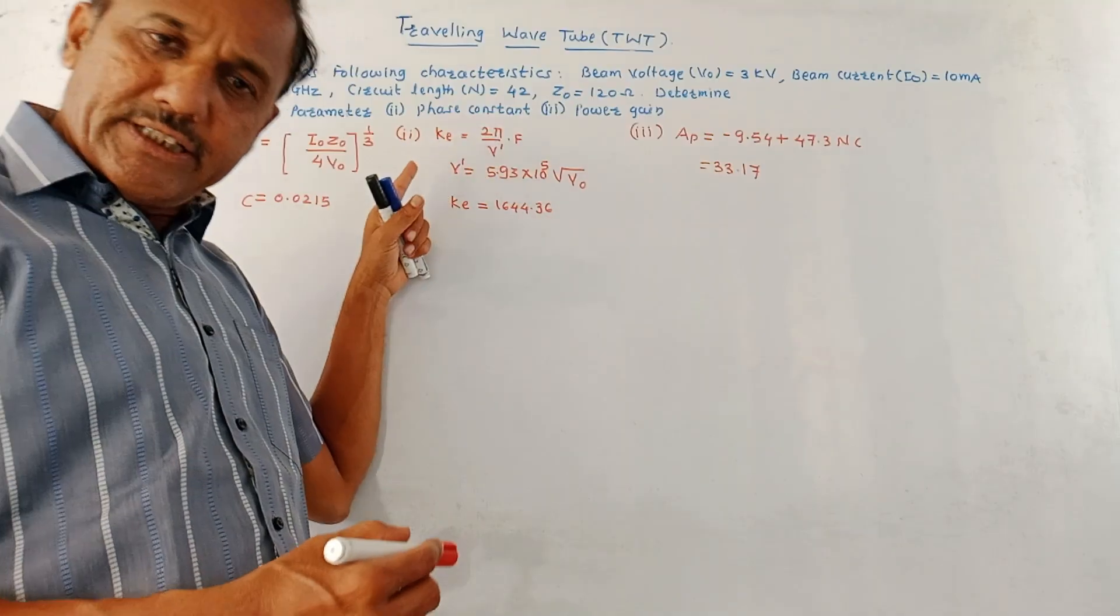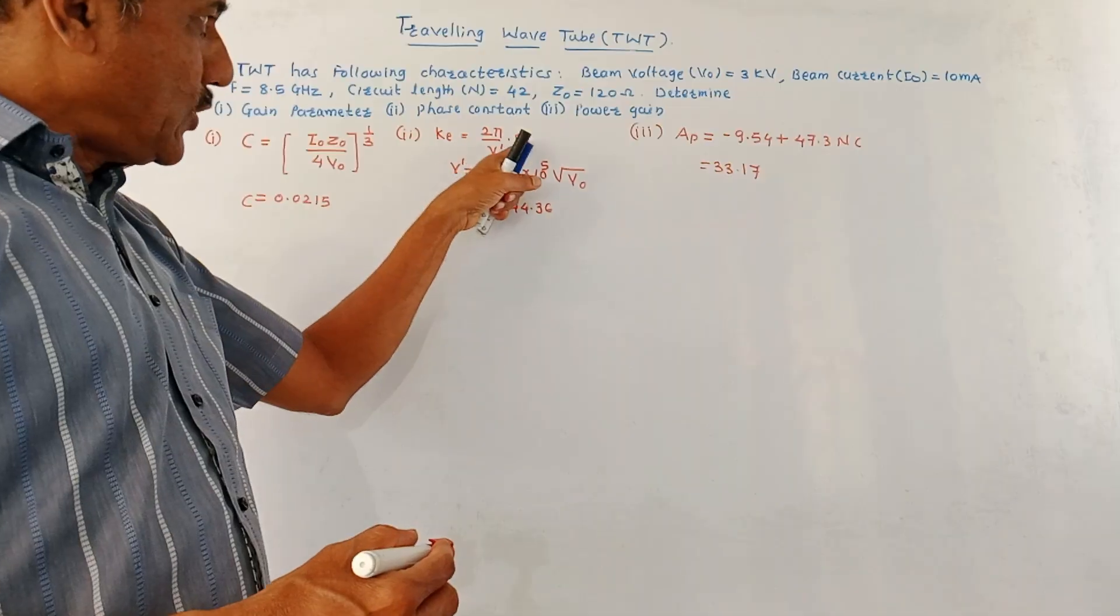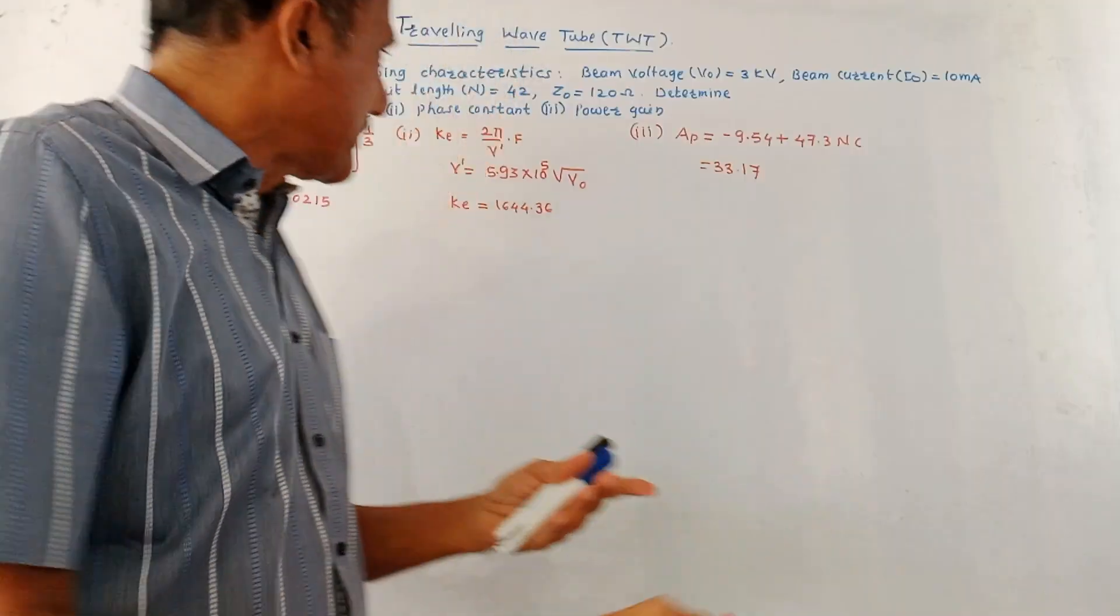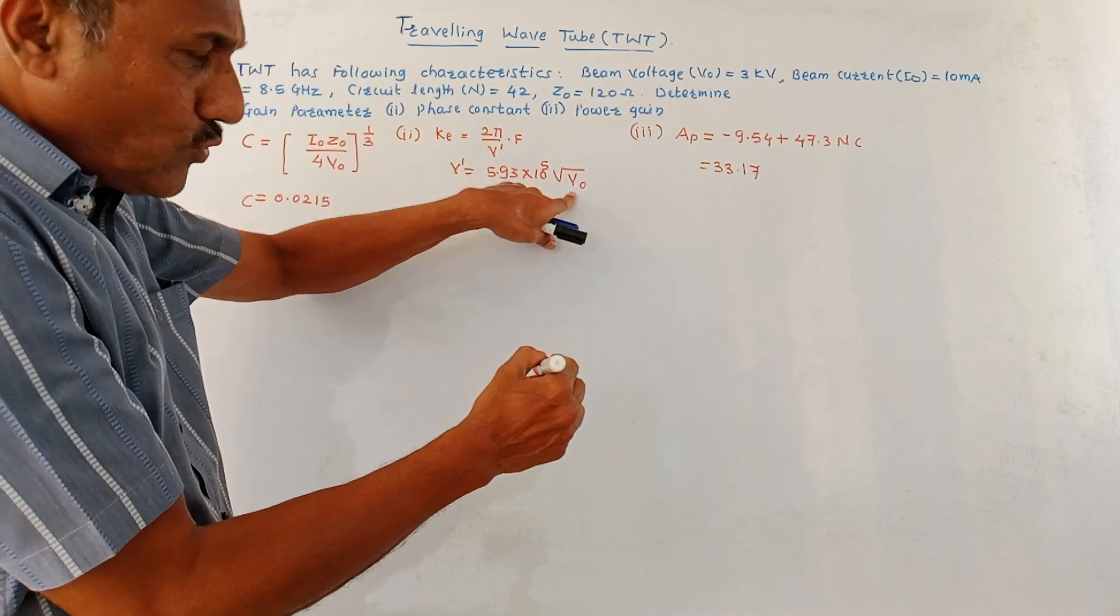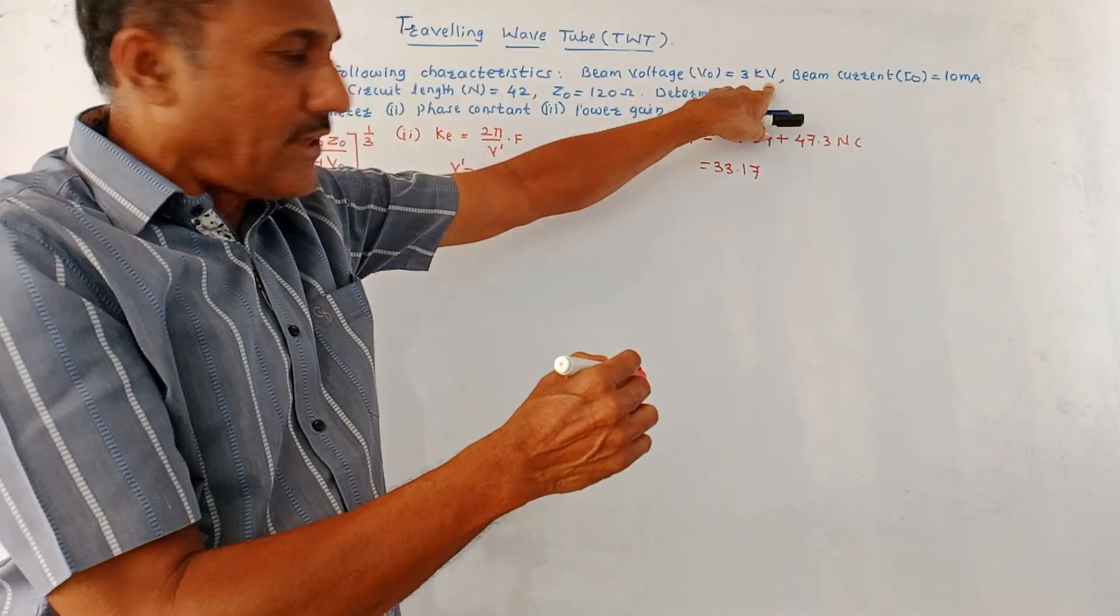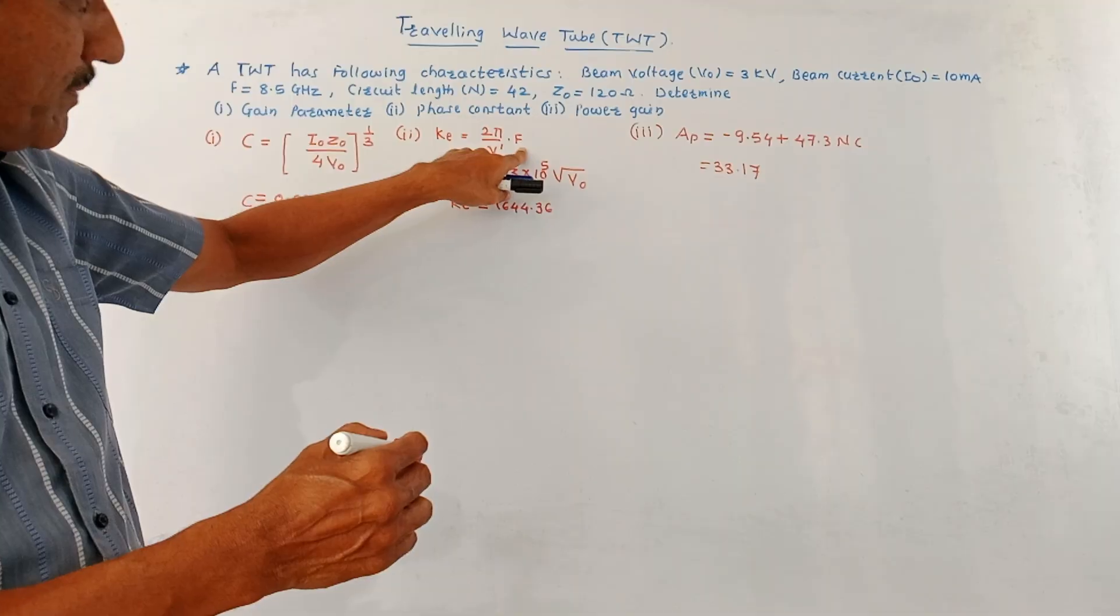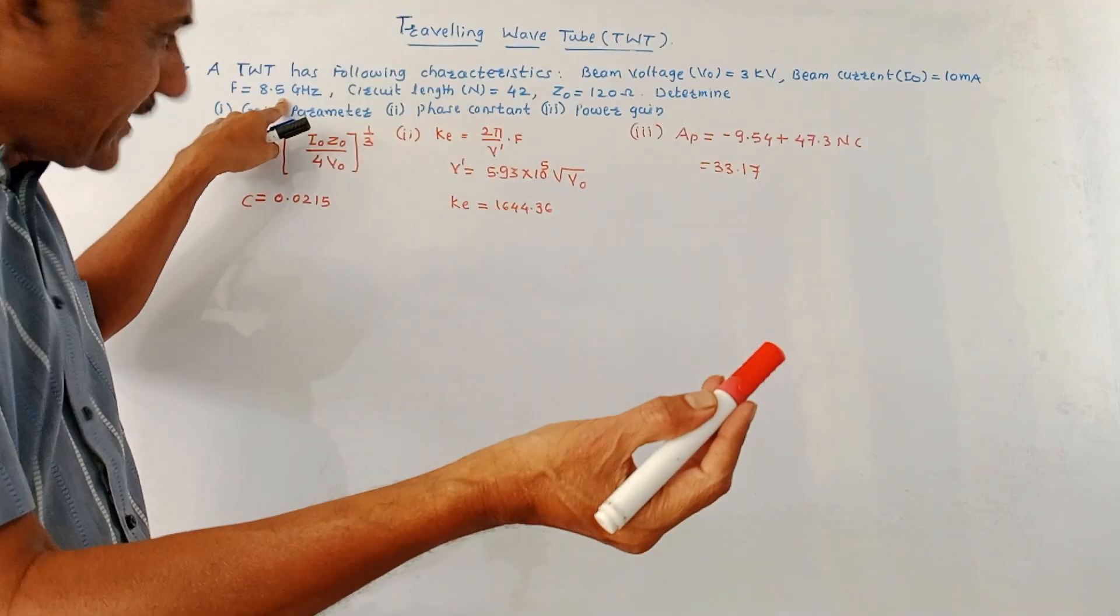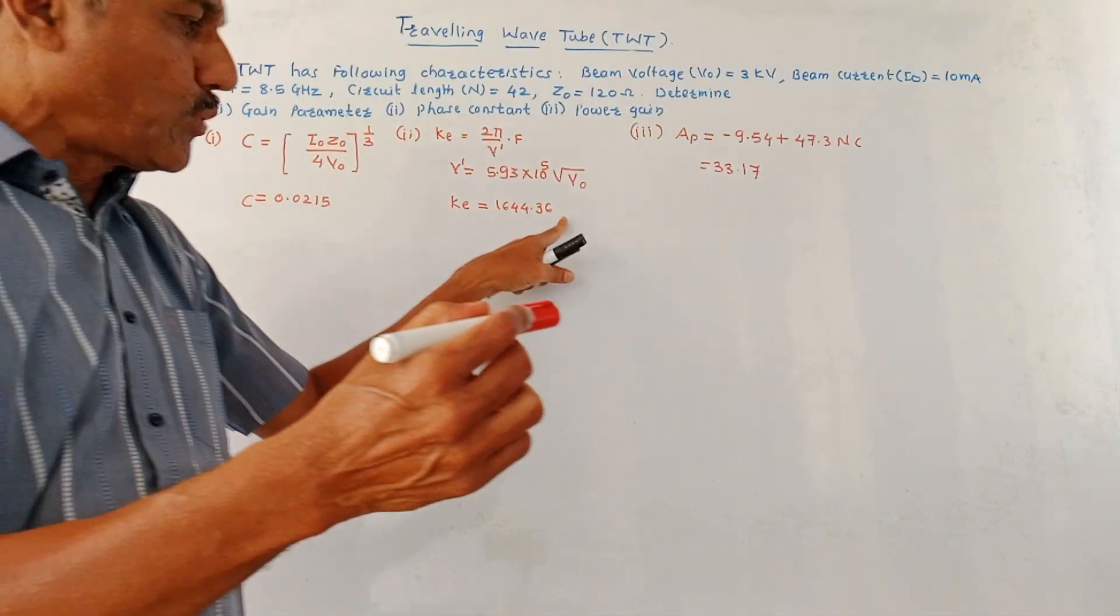Next is phase constant. It is denoted by beta e. So formula is 2 pi upon V dash into F. This V dash is the velocity due to the velocity modulation process, which is expressed as V dash is 5.93 into 10 raised to 5 square root of V0. This is the standard formula. So V0 is again 3 kilo volts, that is 3000. So first you need to calculate V dash. If you put it in this formula, this F is again given in gigahertz. You need to convert it in hertz, 8.5 into 10 raised to 9. So answer of phase constant is 1644.36.